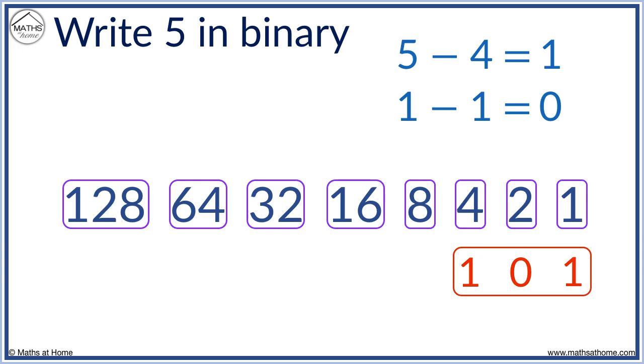In simple terms we just put a 1 below the powers of 2 that we used. Here 5 is made by 4 plus 1.